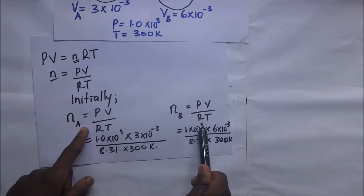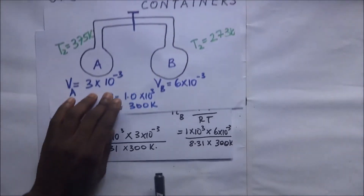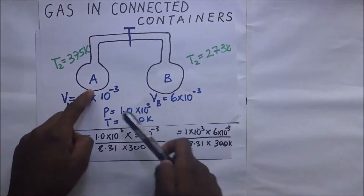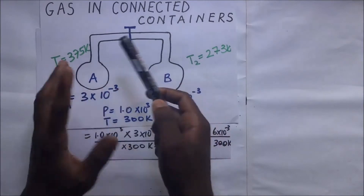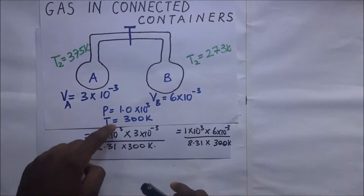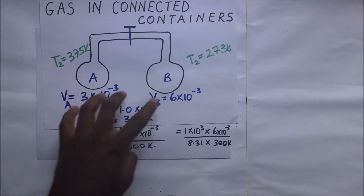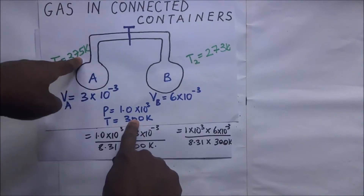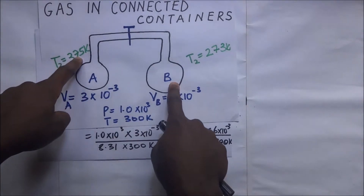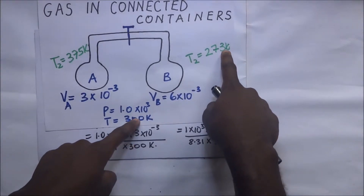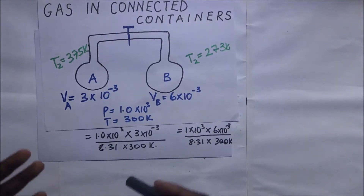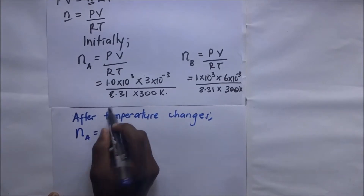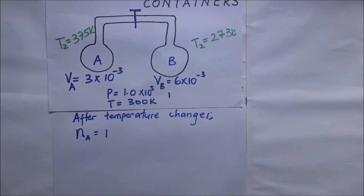After subjecting the containers to the temperature changes, the total number of moles remains the same — only molecules redistribute between A and B. The new number of moles in container A becomes: n_A(new) = PV / RT, where P is the new unknown pressure and the volume of A is still 3×10⁻³ cm³.